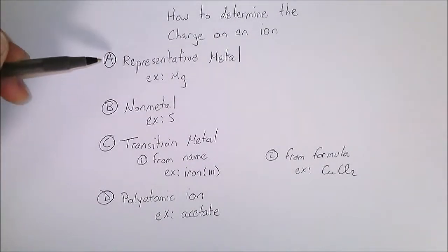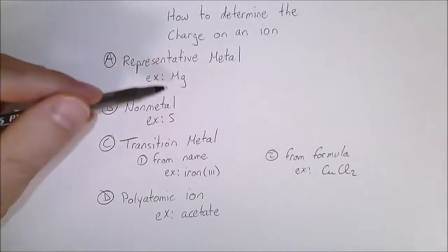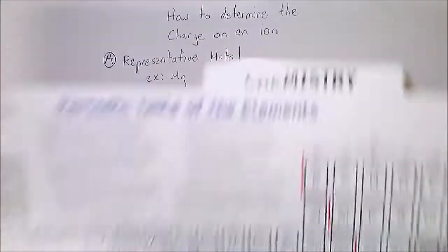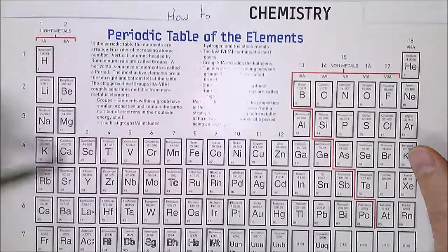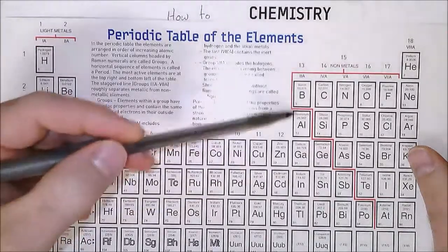We'll start by talking about representative metals like magnesium. Representative metals are part of the group A metals in these two columns and generally in this column as well.